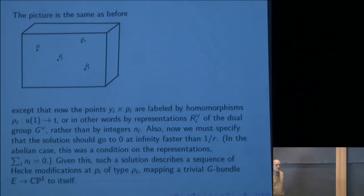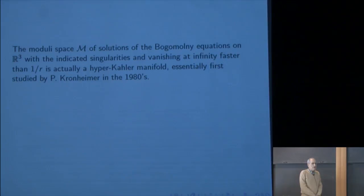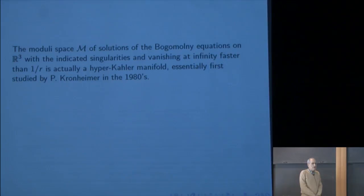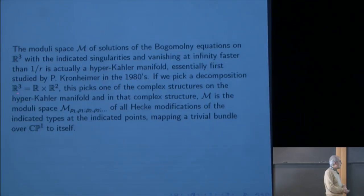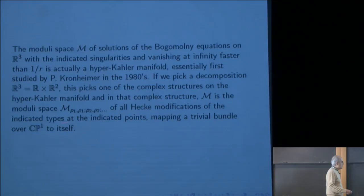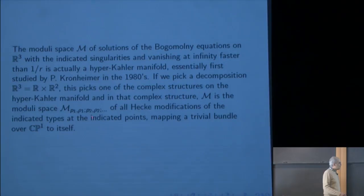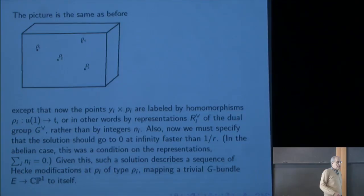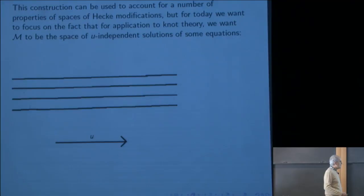The moduli space M of these solutions with the indicated singularities, vanishing at infinity faster than 1/r, is actually a hyperkähler manifold, first studied by Kronheimer in the 1980s. If we pick a decomposition of R^3 as R × R^2, we pick one of the complex structures on this hyperkähler manifold, and we get the moduli space of Hecke modifications of the indicated types, mapping a trivial bundle over CP^1 to itself — a complex symplectic manifold. If you only care about it as a complex symplectic manifold, you can forget the additional coordinate and get the space used in symplectic Khovanov homology.